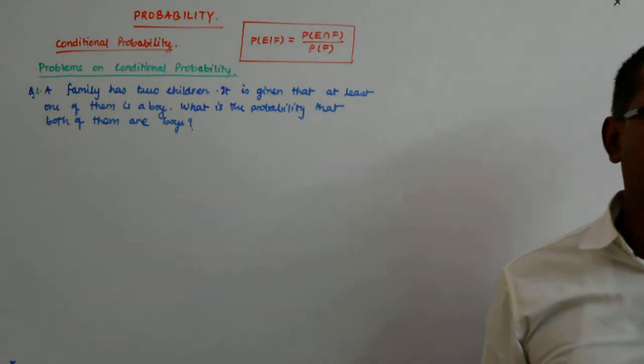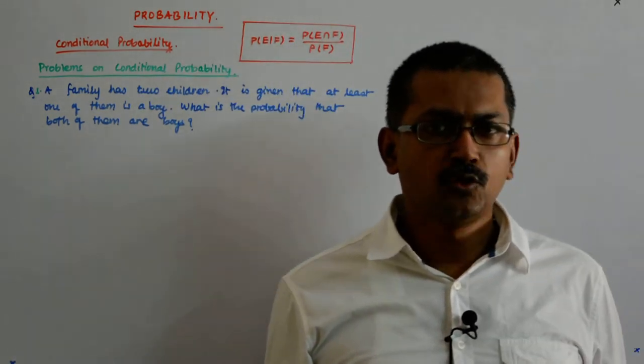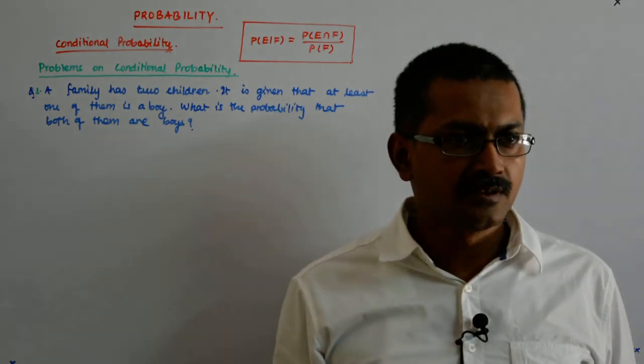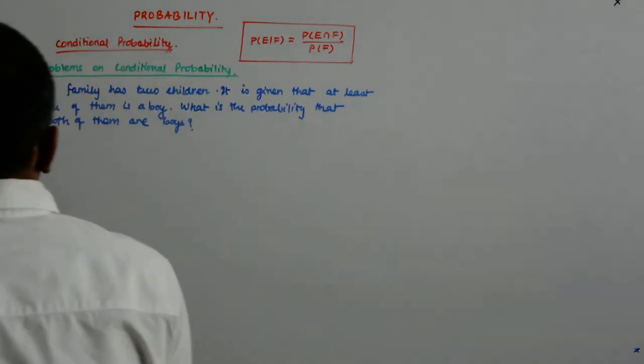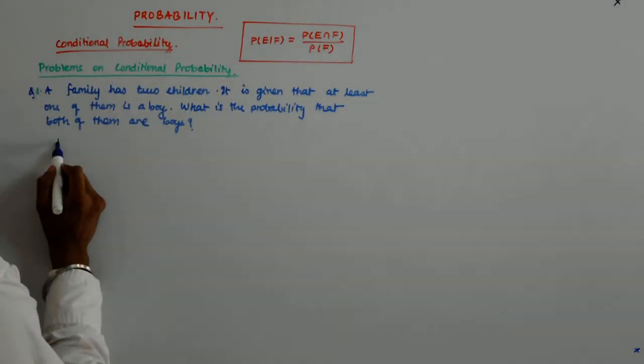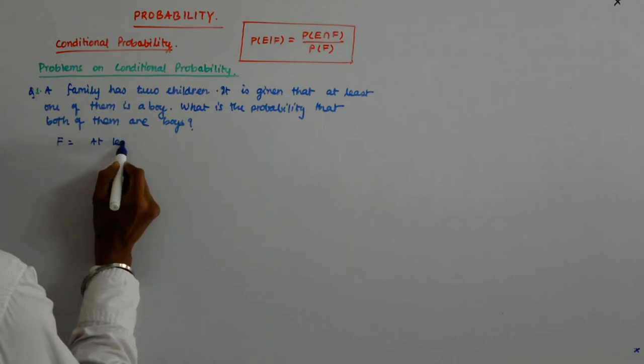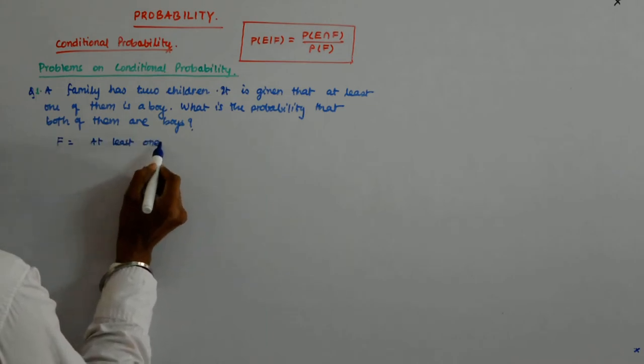Now you can do it two ways. You can do it with the limited sample space, the shrunk sample space. What is the shrunk sample space? At least one of them is a boy. F becomes at least one boy.